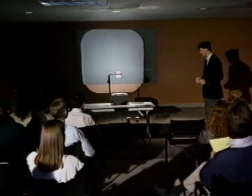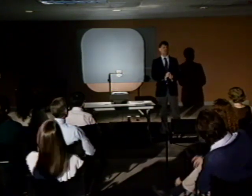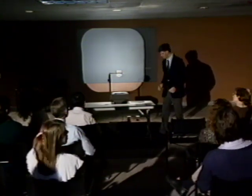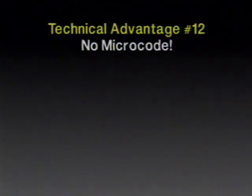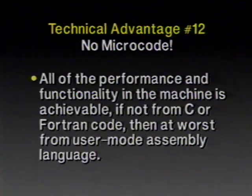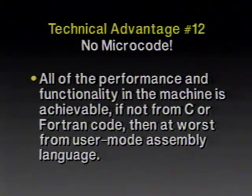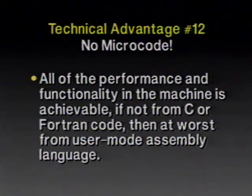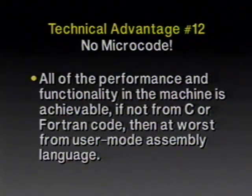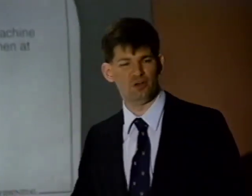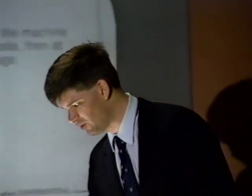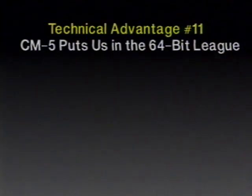Now I want to switch gears completely. I would like to show you 12 technical advantages of the CM5 over anything that's been done to date. Technical advantage number 12: there's no microcode in the machine. All the performance and functionality in the CM5 can be achieved from user-level code. Most of it can be written in C or Fortran. At worst, you might have to descend to assembly language, but it's not necessary to write microcode or anything really grungy. We can expose the entire piece of hardware to a user program, and the user program can have access to all the performance available in the hardware.